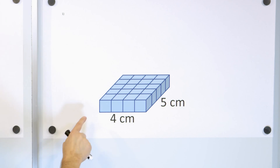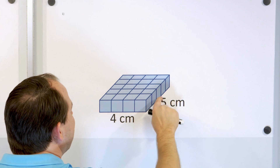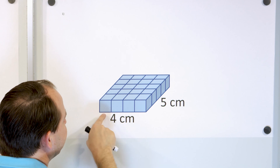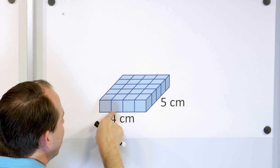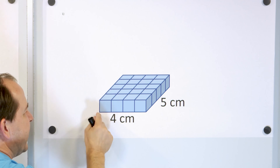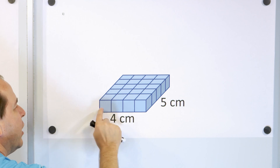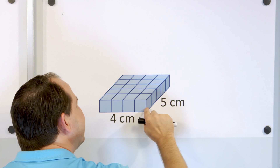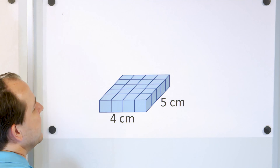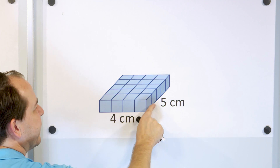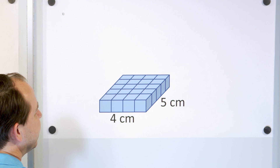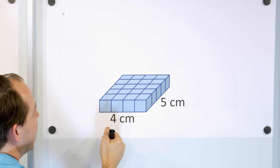The bottom layer is four centimeters wide and five centimeters deep into the board. So if it's four centimeters wide, there must be four cubes that can fit, each one centimeter long. And going the other direction, there must be five cubes that can fit, because they're five centimeters deep and each cube has to be one centimeter long. So how many cubes are in this layer?